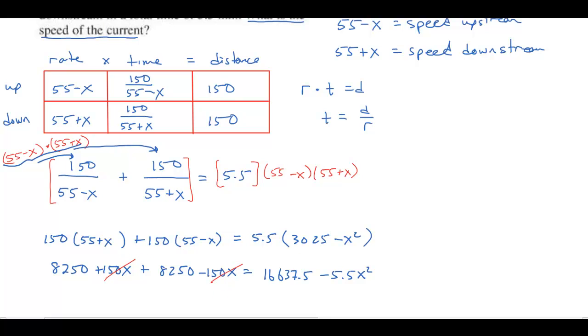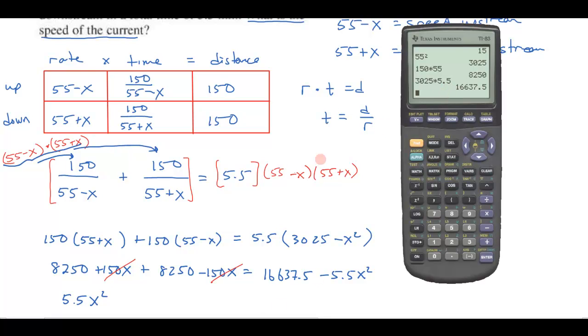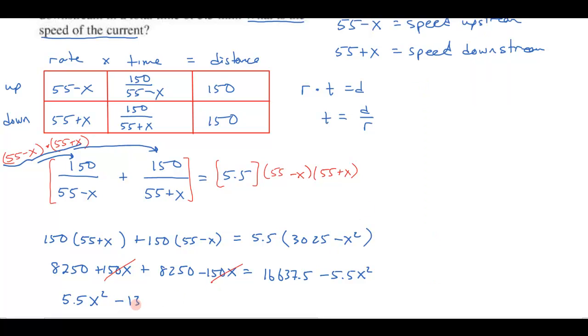Notice over here on the left, my x's are going to cancel. I'm going to end up with just a 5.5x squared with no middle term. Let's bring this over on this side. I'll get 5.5x squared. I'd like my leading coefficient to be positive. I've got 8,250 and 8,250, that's 16,500 minus the 16,637.5. So I've got 8,250 times 2, then subtract 16,637.5. That's minus 13,637.5, and that equals 0.